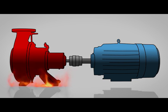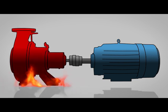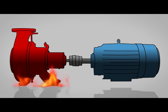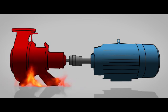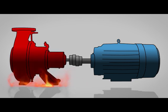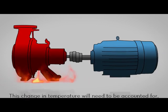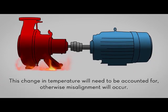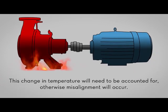It is important to note that the alignment of the machine can change from when it is offline to when it is running at its operating temperature. During the shaft alignment process, this change in temperature will need to be accounted for, otherwise misalignment will occur.